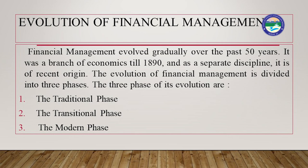The two important components of financial management are procurement of funds and effective utilization of funds. Financial management evolved gradually over the past 15 years. It was a branch of economics till 1890, and as a separate discipline it is of recent origin. The evolution of financial management is divided into three phases: the traditional phase, the transitional phase, and the modern phase.